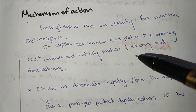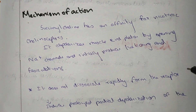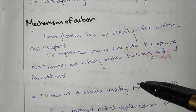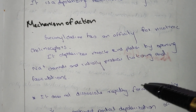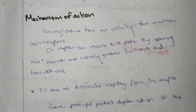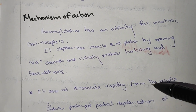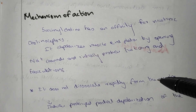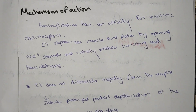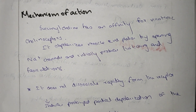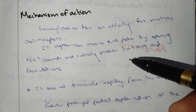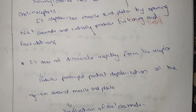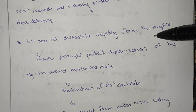Succinylcholine has high affinity for nicotinic cholinergic receptors. It depolarizes the muscle end plate by opening Na+ channels, and initially it produces twitching and fasciculations.